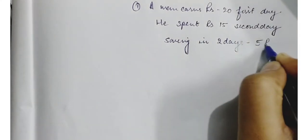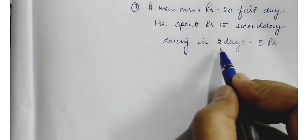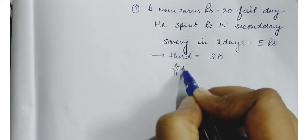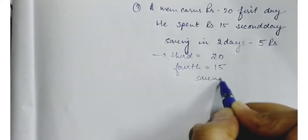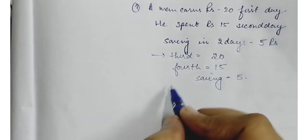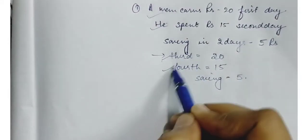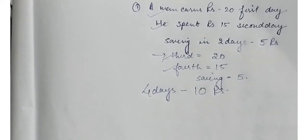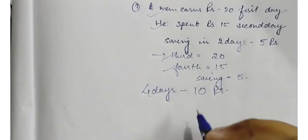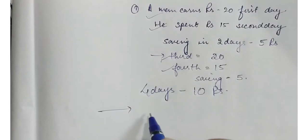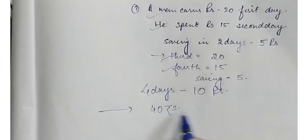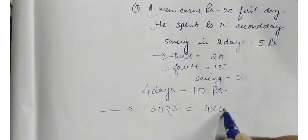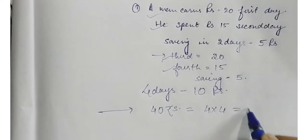پھر وہی condition: third day وہ 20 کما رہا ہے اور fourth day 15 خرچ کر دے رہا ہے — saving ہو رہی ہے 5 روپے کی. یانی total چار دن میں 10 روپے saving ہو رہی ہے. He again earns 20 rupees on 3rd day and spends 15 rupees on 4th day. If he continues to save like this، تو کتنے دن میں وہ 60 روپے بچا لے گا — 4 دن میں 10 روپے saving ہو رہی ہے، تو 40 روپے کے لیے 16 days لگیں گے.